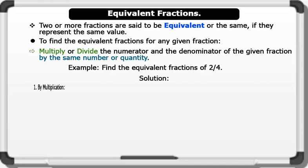1. By multiplication. We multiply the numerator and the denominator of the given fraction by 2. Therefore, 2/4 equals 2 times 2 over 4 times 2. This gives us 4/8.